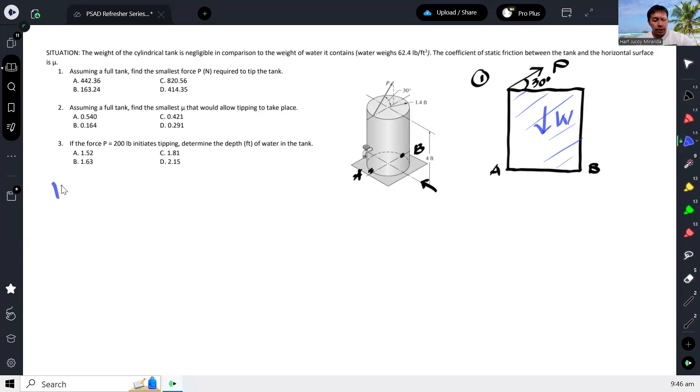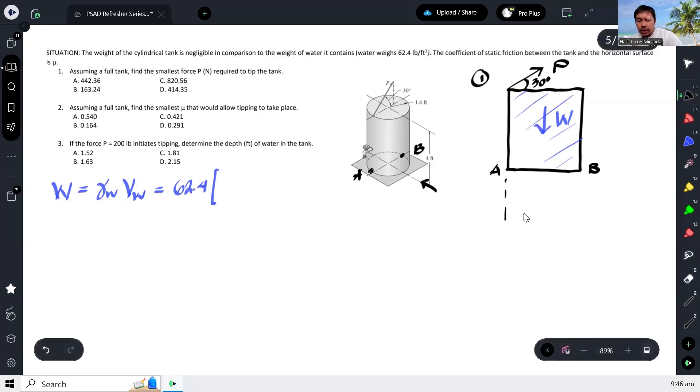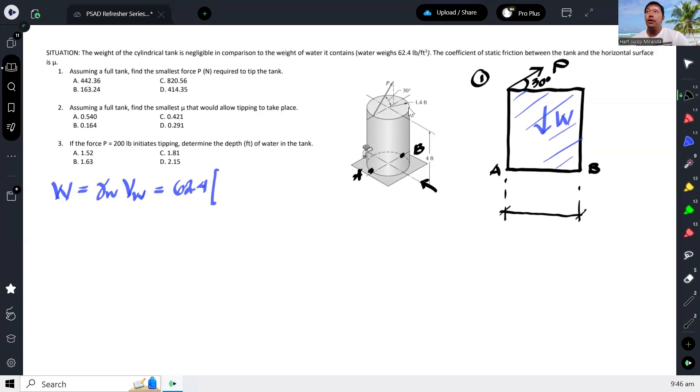Okay, where the weight of water may be calculated as the gamma of water multiplied by the volume of water. So that's 62.4, and then the volume. So as you can see, cylinder naman yan, given naman yung radius. So drawing ko lang - so ito yung diameter bali. The diameter is - ang radius kasi 1.4, so times 2, 2.8.